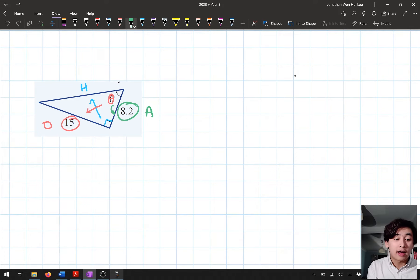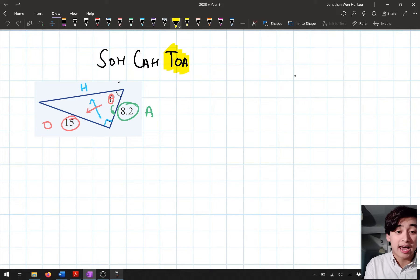8.2 is my adjacent side. Let's identify our trig ratio. Now just remember you don't need to write this every time you do the questions, but I like writing it just so I know where it is. Which one has O and A? The last one, tan.